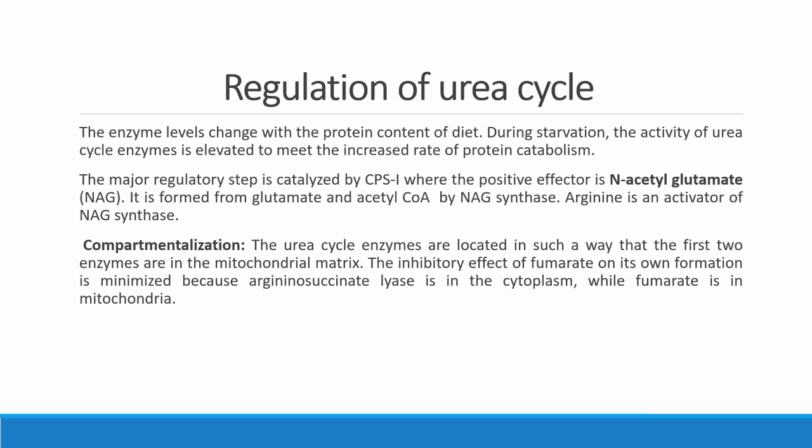Carbamoyl phosphate synthetase I is allosterically regulated by N-acetylglutamate, which is formed from acetyl-CoA and glutamate. N-acetylglutamate is a positive effector — it binds to the allosteric site of the enzyme to increase its catalytic activity. Allosteric enzymes contain a regulatory region where a positive or negative effector can bind. Additionally, arginine is an activator of N-acetylglutamate synthase, the enzyme that catalyzes the reaction between glutamate and acetyl-CoA to form N-acetylglutamate.